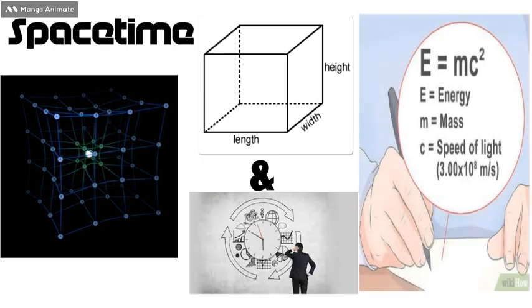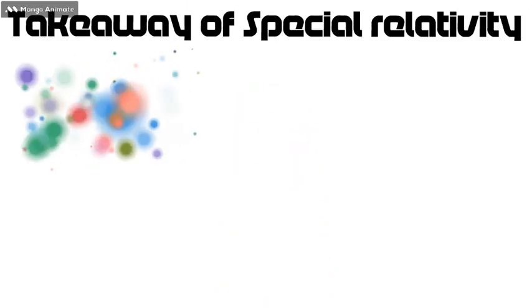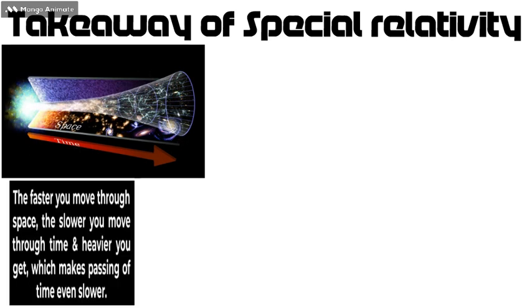Special relativity gives us the famous energy-mass equation E equals mc squared. The major takeaway of special relativity is that we all are moving through space and time simultaneously. The faster you move through space, the slower you move through time, and vice versa.